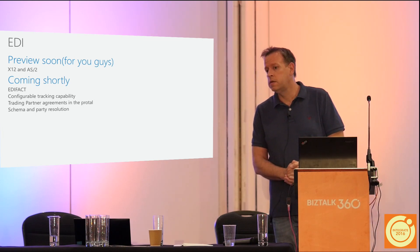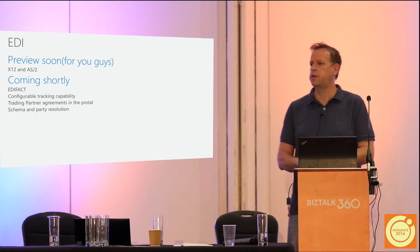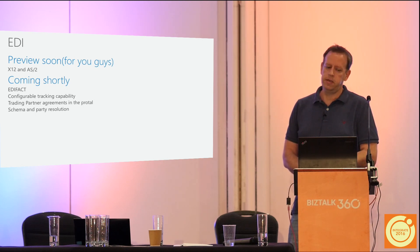Question: For existing BizTalk Server EDI customers, is there a way to migrate — reusing agreements, schemas, and maps — into this new scenario? Schemas and maps we've already talked about. For trading partners and agreements, we've designed this with backward compatibility in mind. We're not exactly sure what the migration mechanism will look like from BizTalk Server to Logic Apps, but that's definitely in scope. We understand customers have hundreds or thousands of trading partners and don't want to re-enter all that data — some kind of export/import mechanism is the plan.